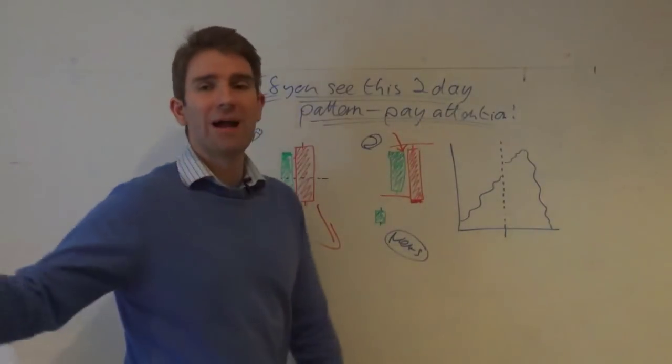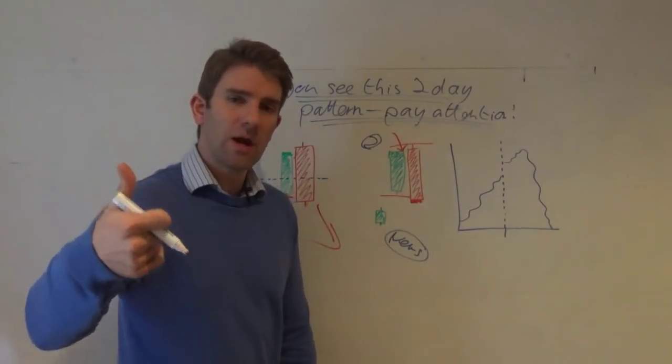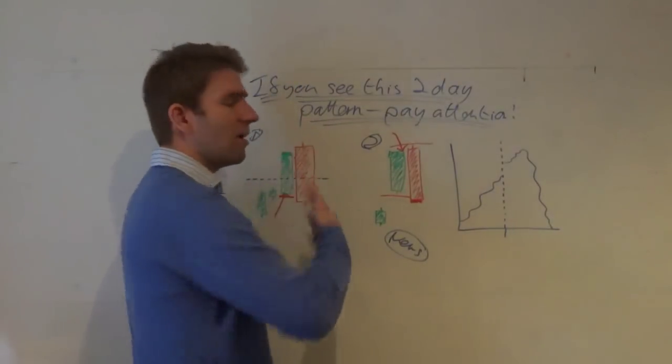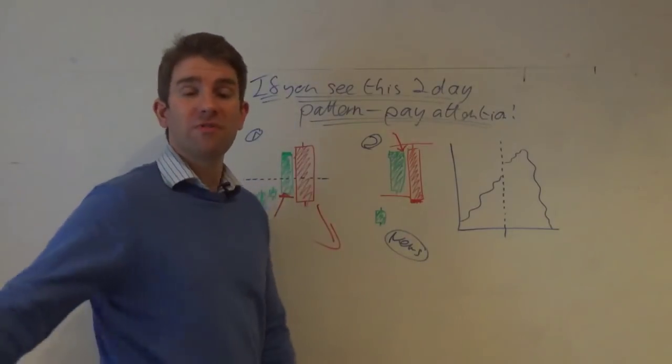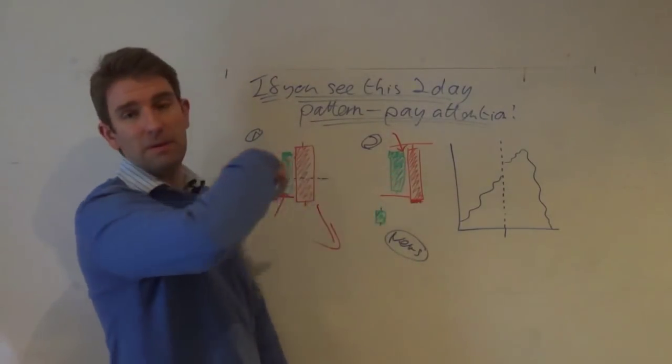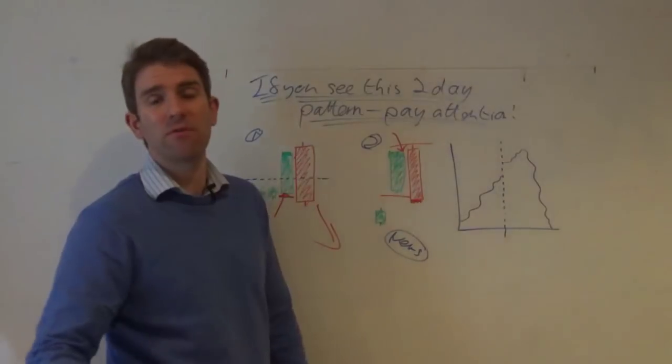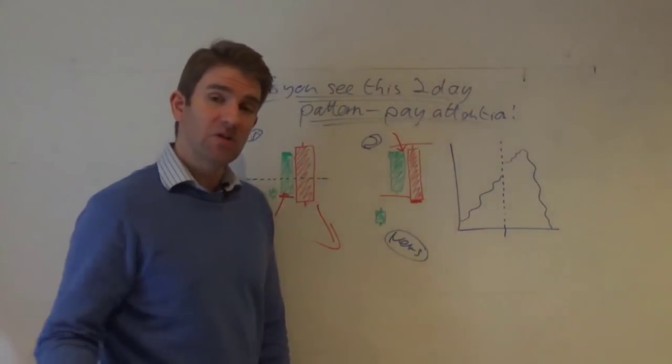We have confusion. We have people saying 'hey, what's going on? This was a breakout, we closed at highs, it was all looking good, now we've reversed.' We've got confusion because we've got good news, everything's looking fantastic, we gapped up, we pushed to highs and reversed. We're taking advantage of that confusion.